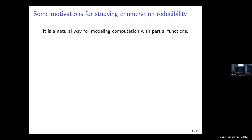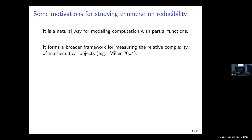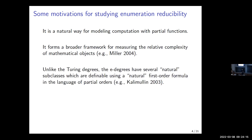Some motivations for studying enumeration reducibility: it is a natural way for modeling computation with partial functions. It forms a broader framework for measuring the relative complexity of mathematical objects — one example is Joe's work from 2004. Another reason is that unlike the Turing degrees, the E degrees have several natural subclasses which are definable using a natural first-order formula. Based on work of Kalimulin, people have found several first-order definitions of classes that at first glance are not obviously first-order definable, and these definitions are pretty short and don't rely on the kind of coding done in the Turing degrees.